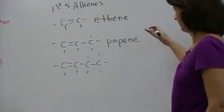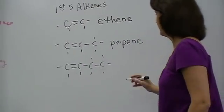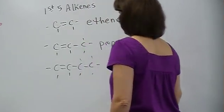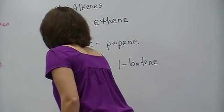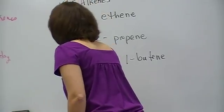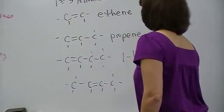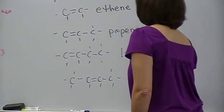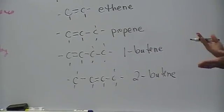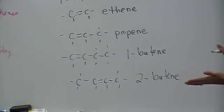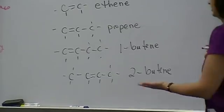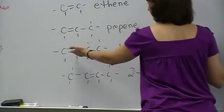The difference here, what we're going to run into once we reach the butene, is we have to put a number to tell where the double bond is. Because there's a 1-butene and there's a 2-butene. It's like you're numbering the carbons, but you're also numbering the bonds in between. Let that sink in for a second. Ethene, it doesn't matter, it's always 1-ethene. Propene, it's always 1-propene. But do you see the difference between the 1-butene and the 2-butene?